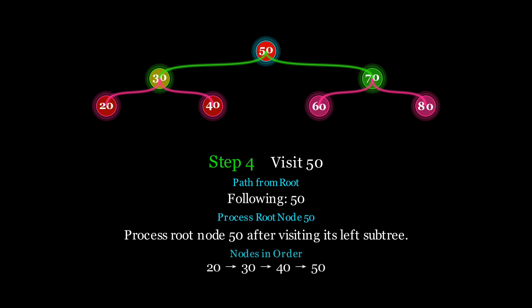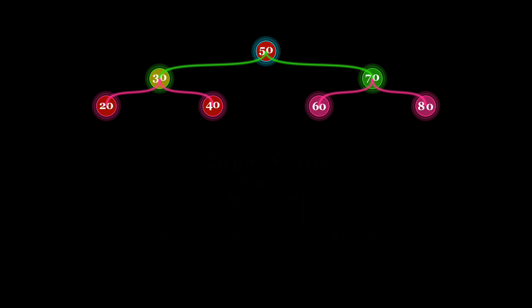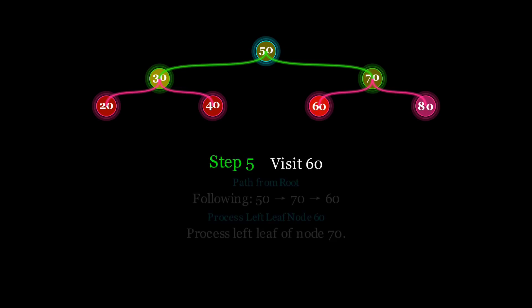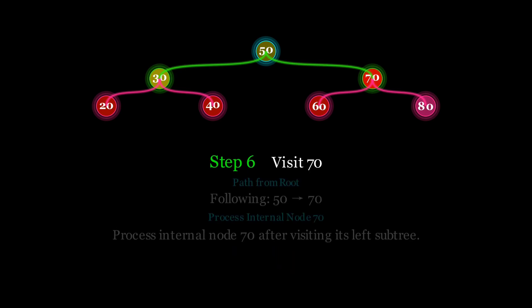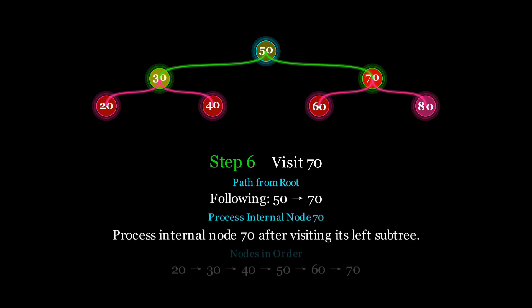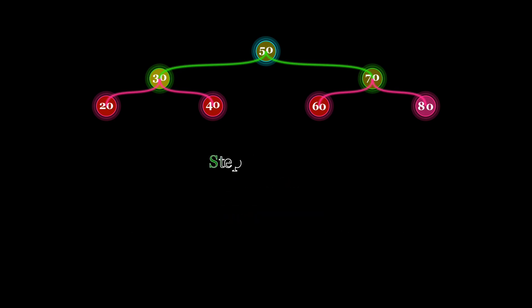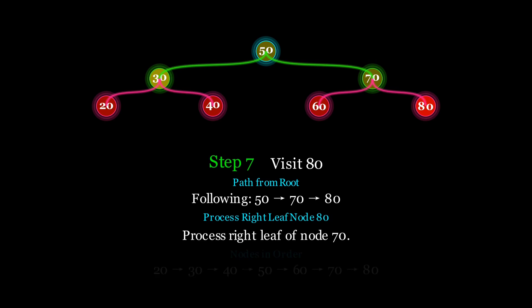Next we move to the right subtree of 50, starting with node 70. Since node 70 has a left child 60, we process 60 first. Then we backtrack to node 70, and since we have visited its left subtree we process node 70. Finally we move to the right child of 70, which is 80. Since 80 has no children, we process it last. The final traversal order is: 20, 30, 40, 50, 60, 70, 80.